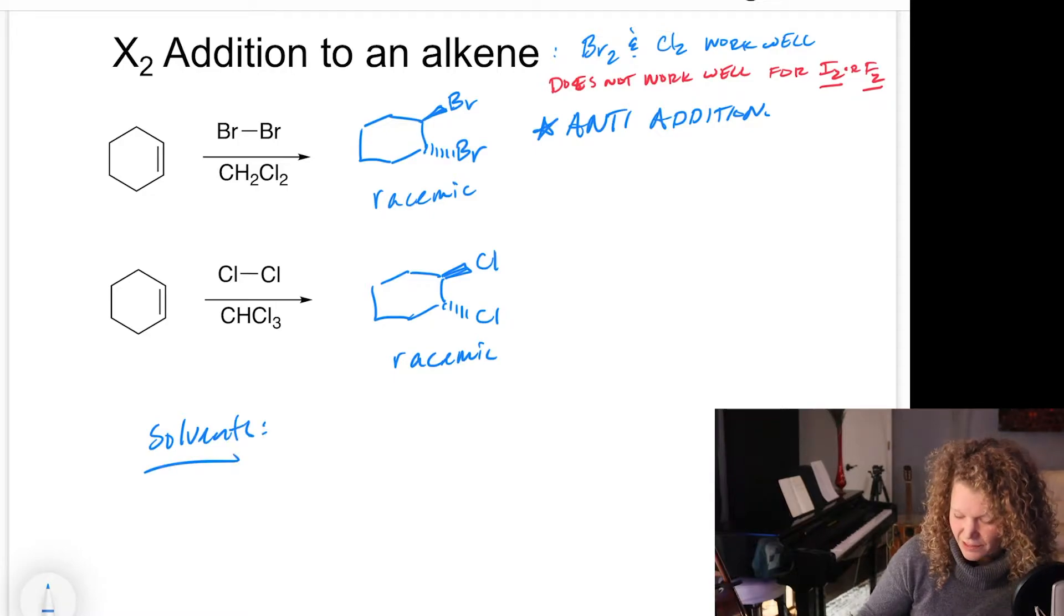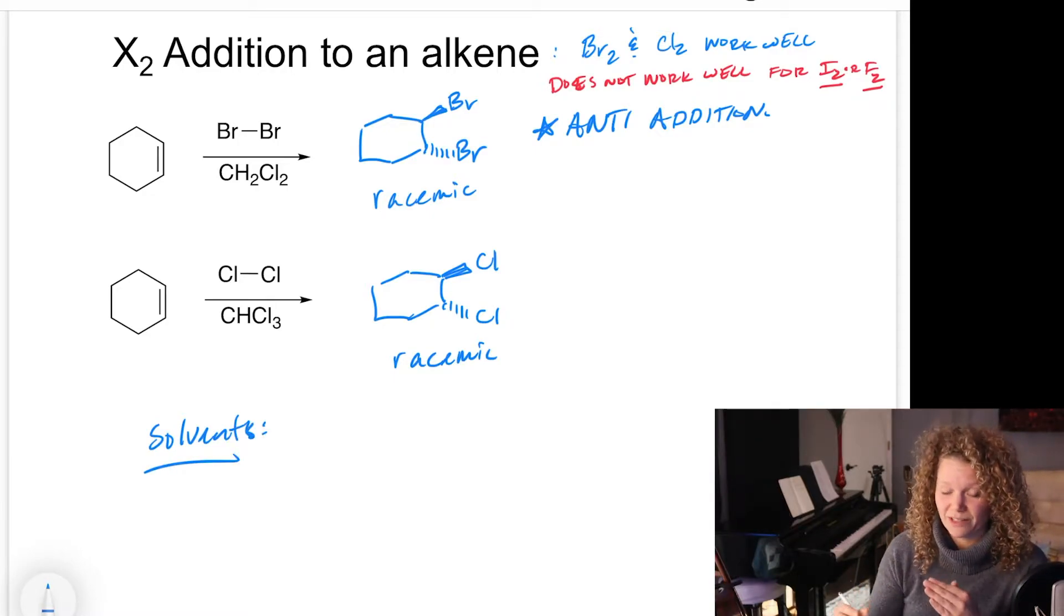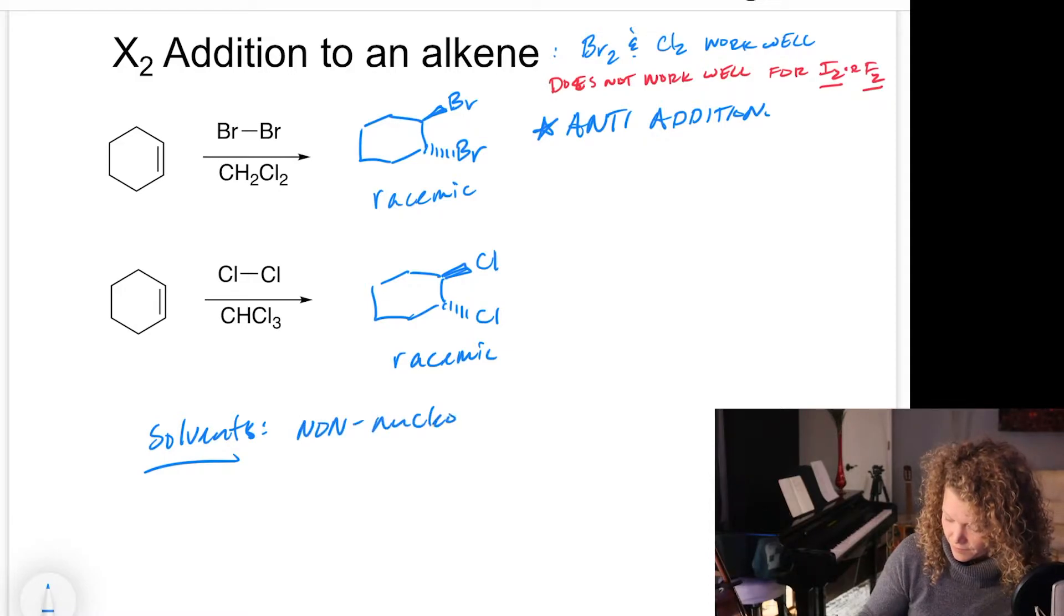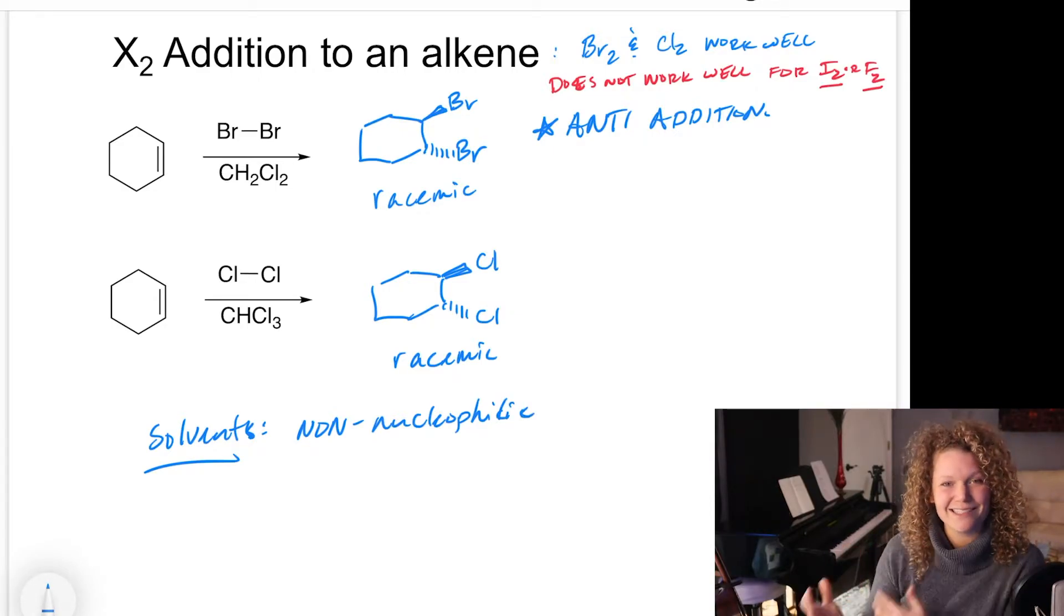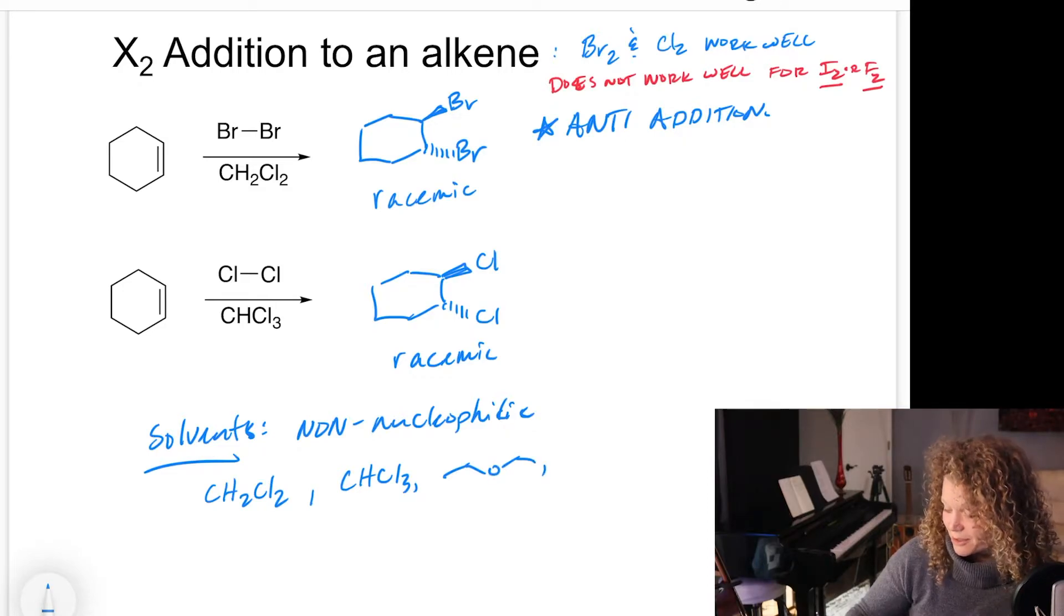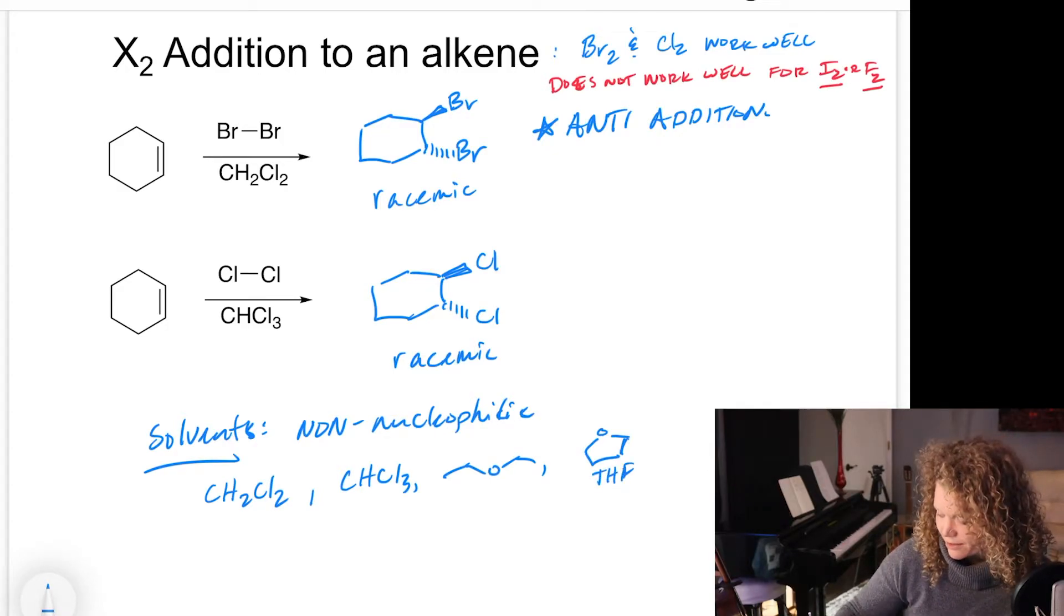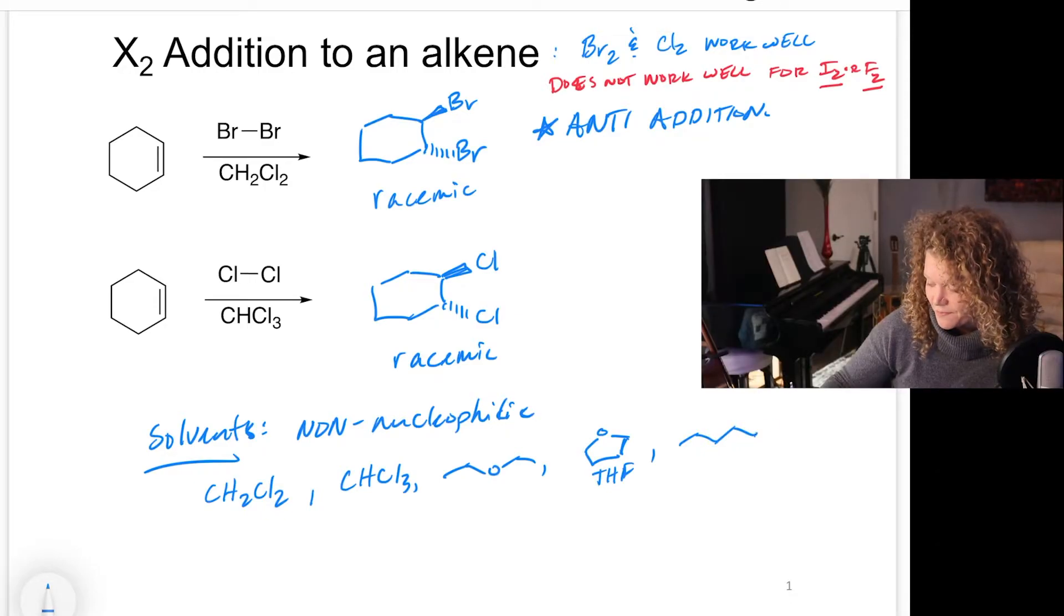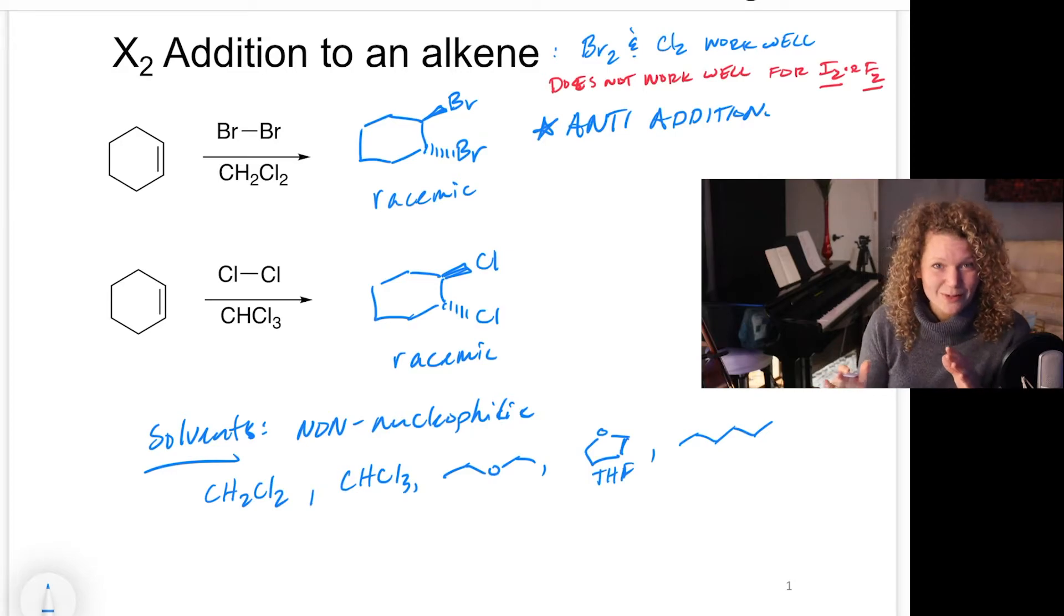Now you can also do this with chlorine and you'd imagine the same kind of products here where we would have a chlorine coming forward as well as back. These two are opposite of each other and we would also get this racemic product. Solvents that you can use. The key here is that we want to use something that's not nucleophilic. These solvents also have to be able to dissolve our alkene and our halide, our diatomic molecule here. So solvents that work well, the ones that I have here are dichloromethane, chloroform, diethyl ether or tetrahydrofuran, THF. You can get away with hexane as well.